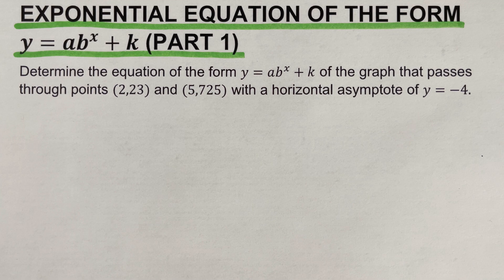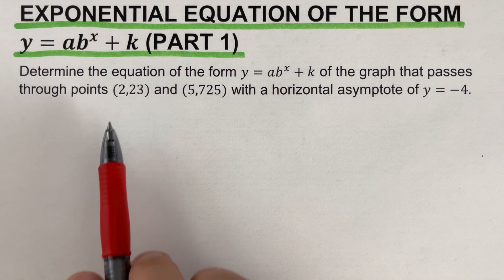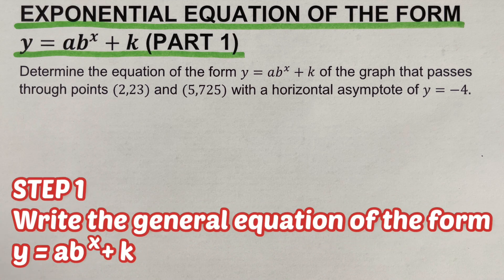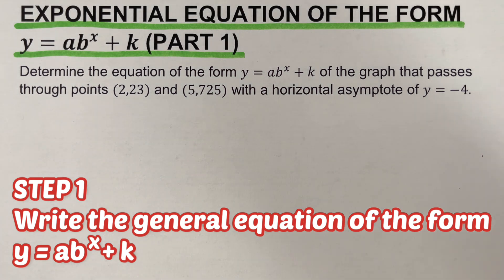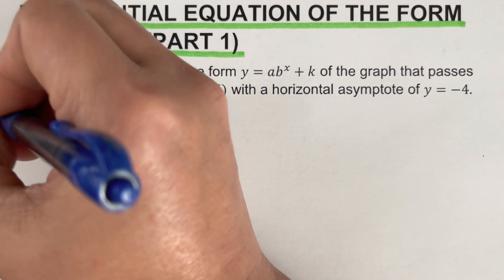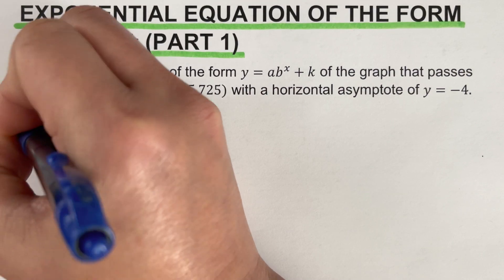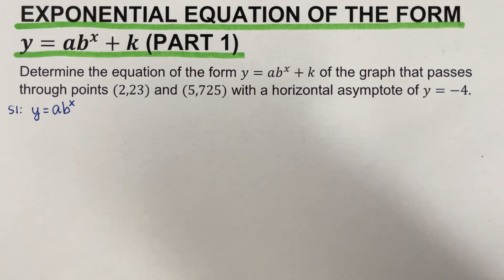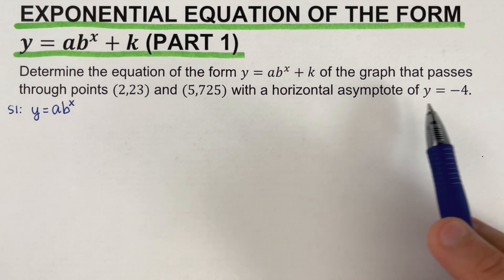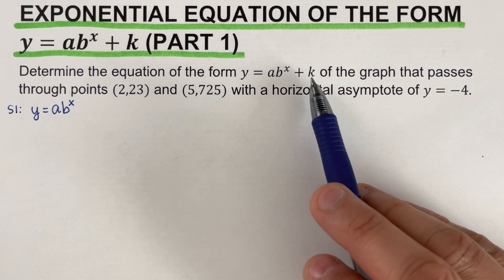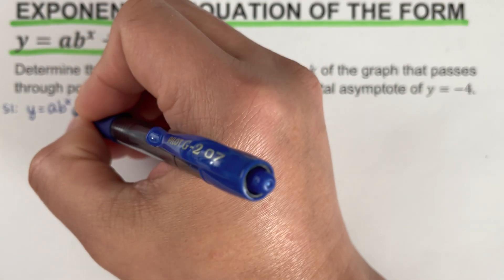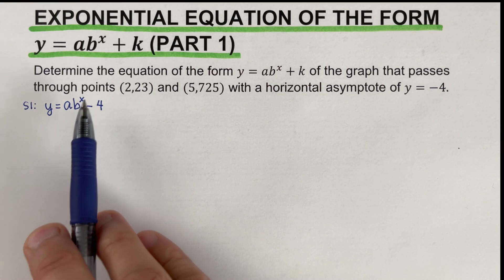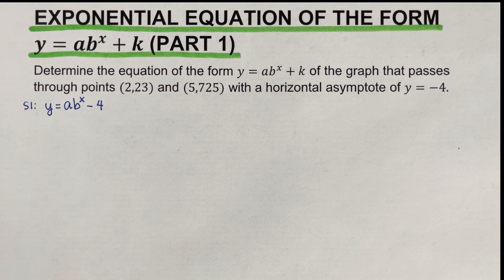There are steps we need to follow to determine the equation. Step 1: write the general equation of the form y equals a·b raised to the power x plus k. We write y equals a·b raised to the power x. The horizontal asymptote represents k, so we add negative four, giving us y equals a·b^x minus 4.